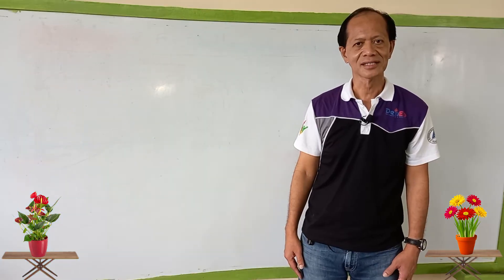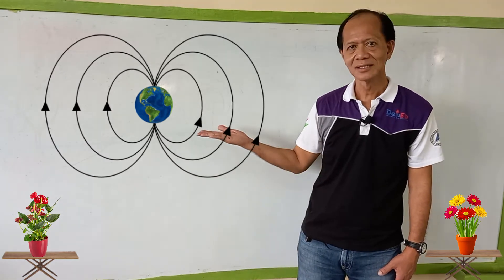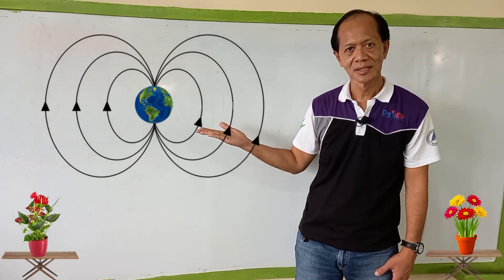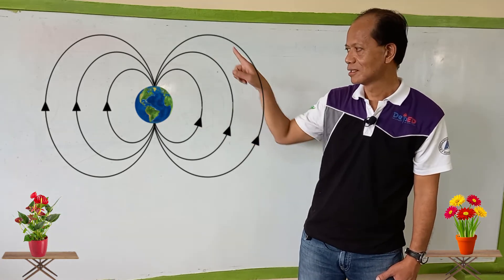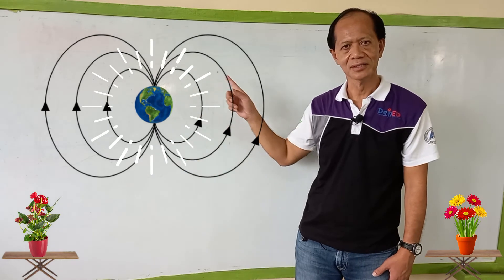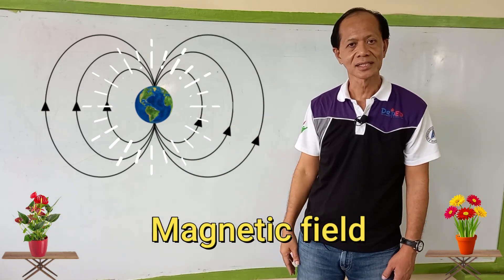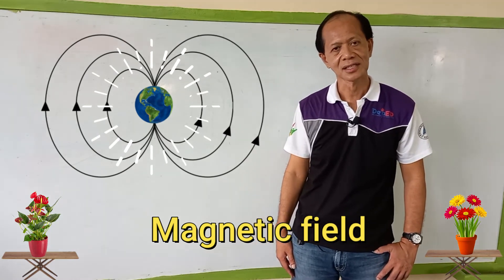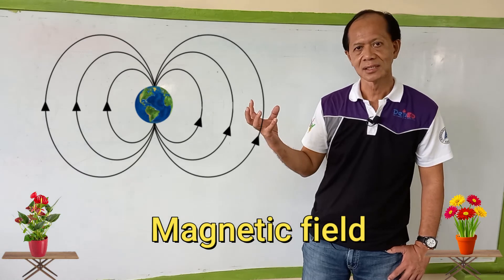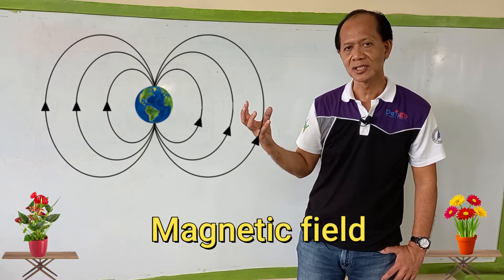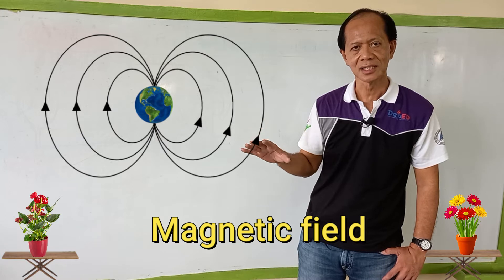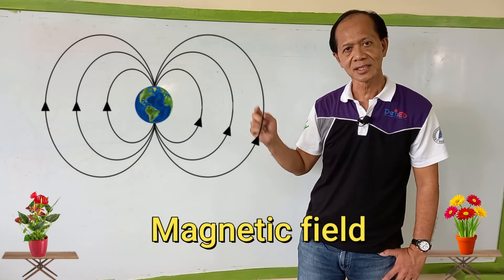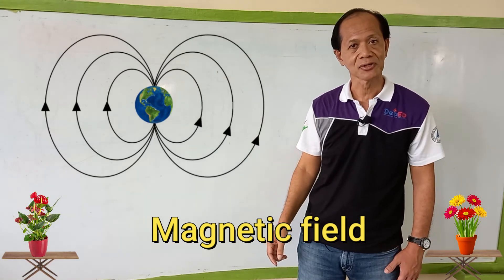Number three: the planet Earth is protected from the harmful solar radiation of the sun by its magnetic field. Our planet has a magnetic field that comes from the inner core of the planet Earth. It radiates a magnetic field, and this magnetic field protects the Earth from the harmful solar radiation.